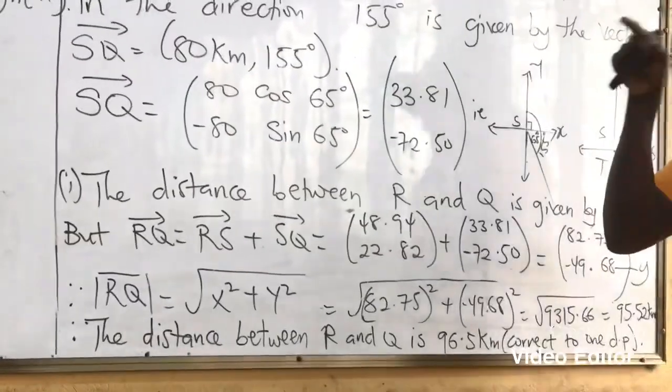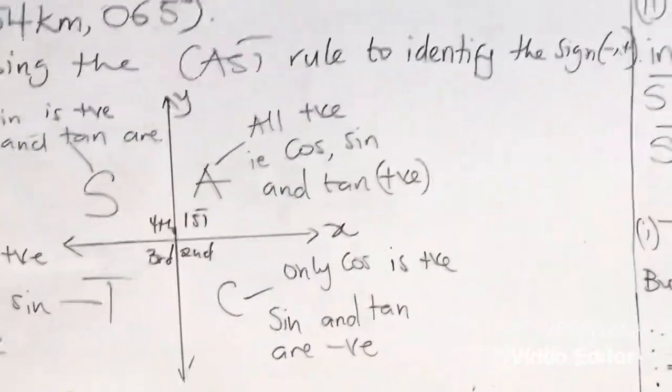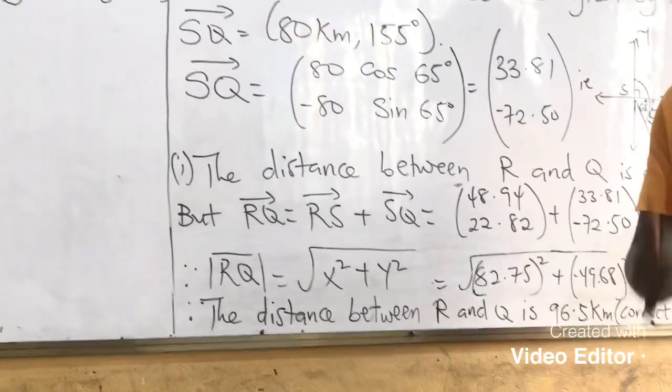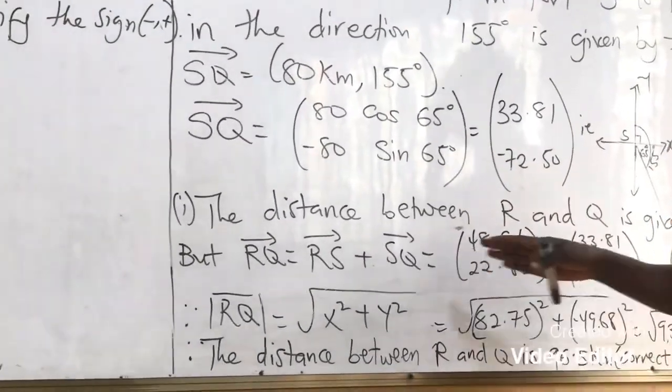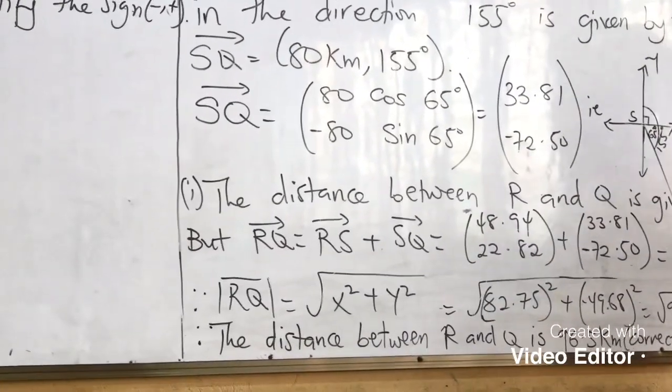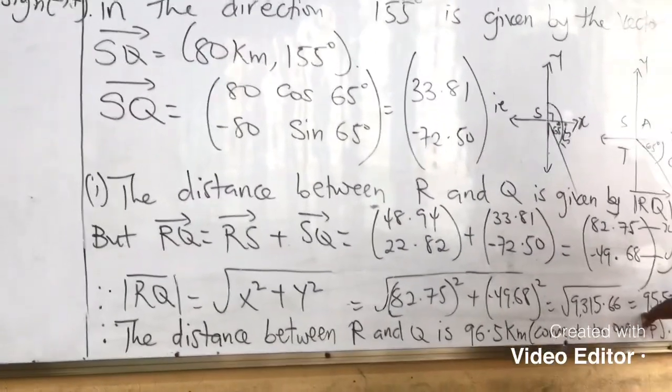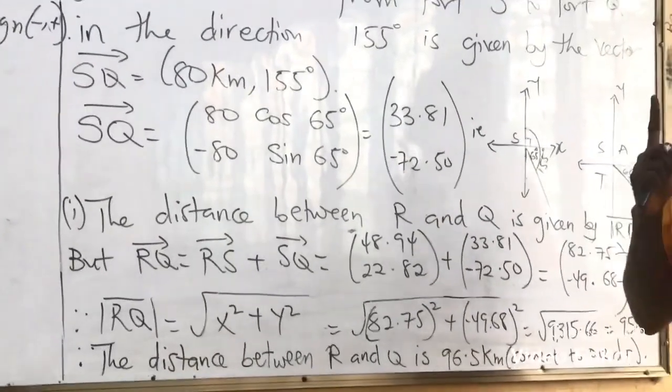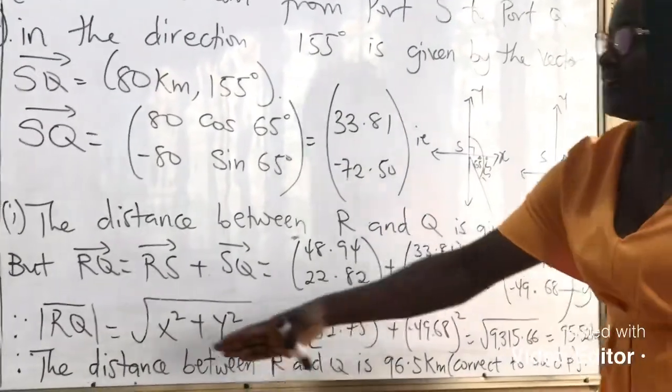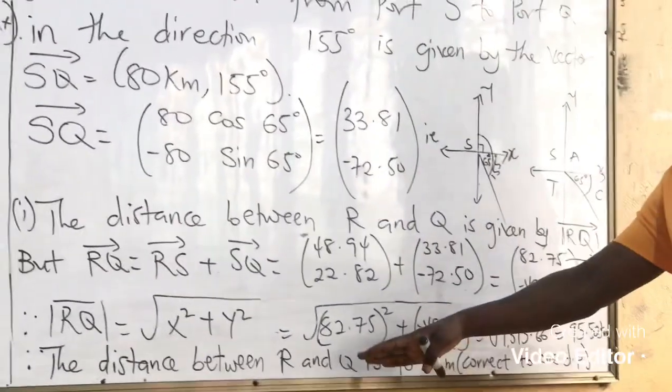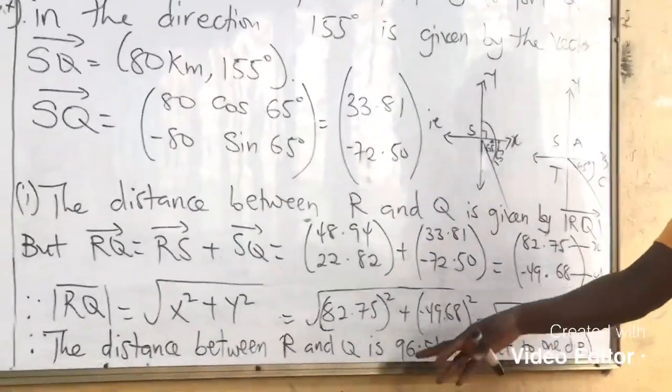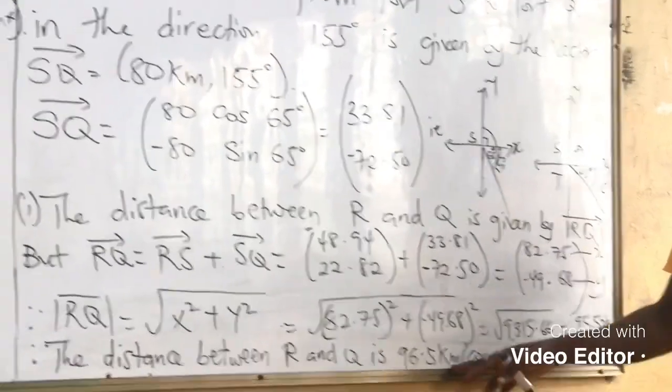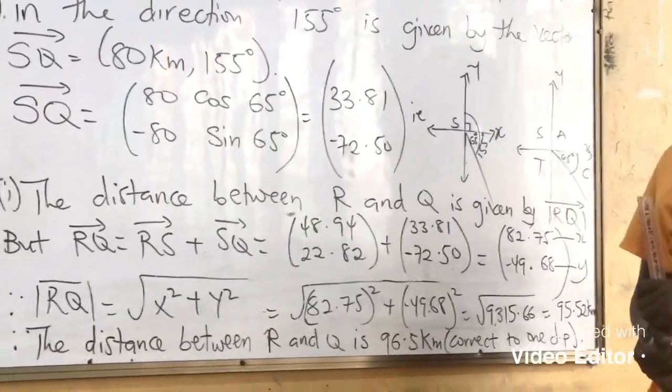The question gave us a clause that find the distance correctly to one decimal place. So if you leave the answer in this form, your final answer won't be marked correct. You have to correct it to one decimal place. Therefore, the distance between R and Q is given as 96.5 kilometers. And that gives us our final answer.